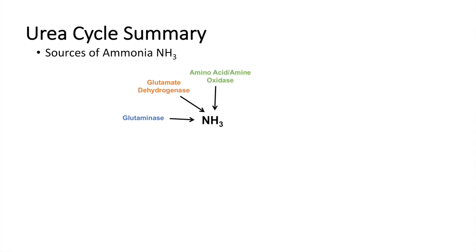Another set of enzymes that produce ammonia are the amino acid or amine oxidases. Purine and pyrimidine metabolism also produces ammonia. Another source of ammonia that students often forget is intestinal bacteria — this becomes clinically relevant when a person has a perforated bowel, leading to an increased ammonia load from bacterial production.